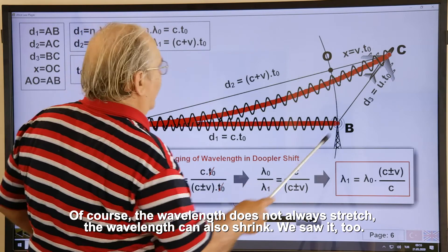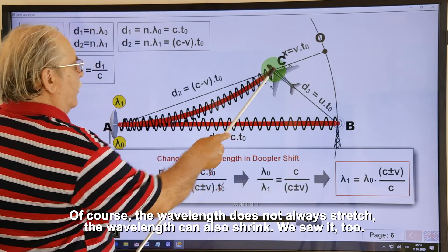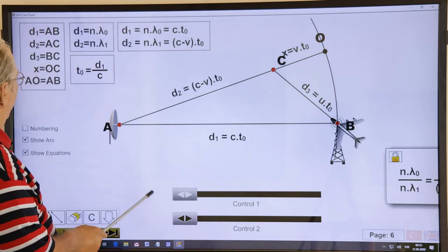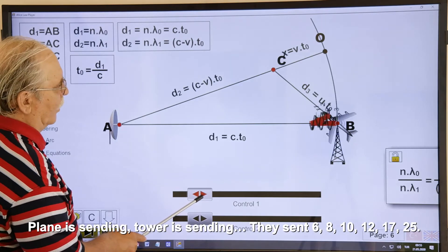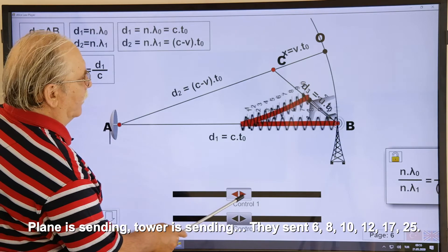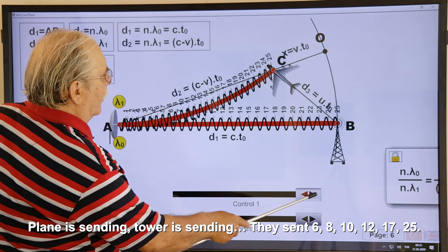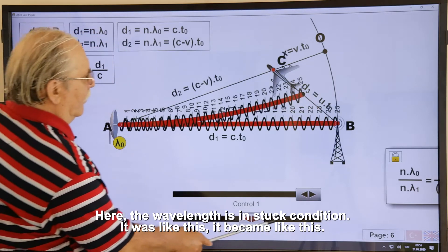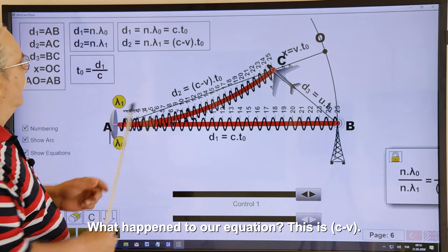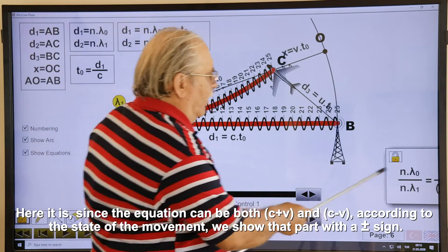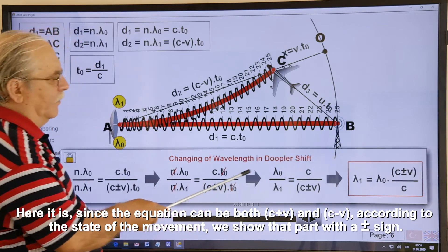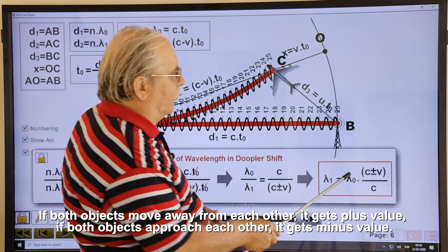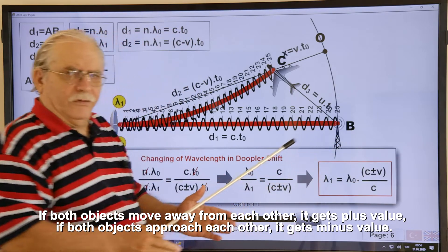Of course, the wavelength does not always stretch, the wavelength can also shrink. We saw it too. If there is such a movement, the wavelength will eventually shrink. Let's see this too. Plane is sending, tower is sending. They sent 6, 8, 10, 12, 17, 25. Here, the wavelength is in stuck condition. It was like this. It became like this. What happened to our equation? This is C minus V. Here it is, since the equation can be both C plus V and C minus V. According to the state of the movement, we show that part with a plus minus sign. If both objects move away from each other, it gets plus value, if both objects approach each other, it gets minus value.